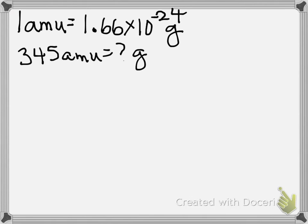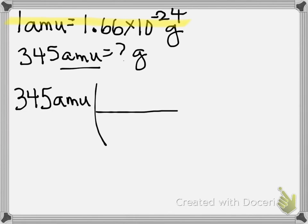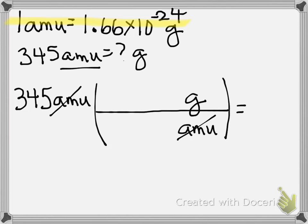We want to know how many grams that is, so the information they gave us is our conversion factor. Our given is 345 AMUs. AMUs need to be in the bottom. Grams are going to be on the top. AMUs have canceled out, so my answer is left in grams. It tells us 1 AMU is 1.66 times 10 to the negative 24th grams. I should multiply because 1.66 is in the numerator, as is the 345.